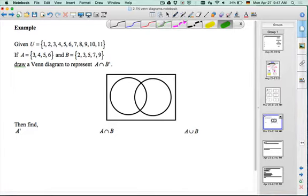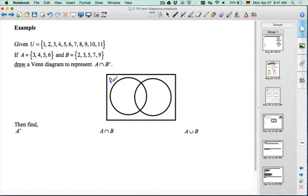Our first task is to draw a Venn diagram to represent A intersection with not B. Before we can get to that, I find the easiest to start with the intersection. So we better do some labeling here. That's A, that's B, and 3 is in both, and 5 is in both. So if we put 3 and 5 in the middle...